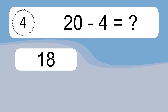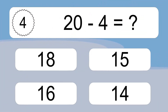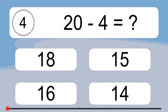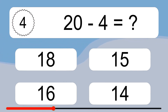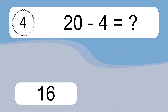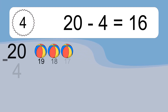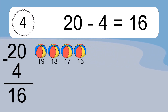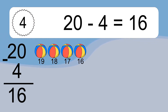20 minus 4 equals what? 20 minus 4 equals 16. Let's count it: 19, 18, 17, 16.